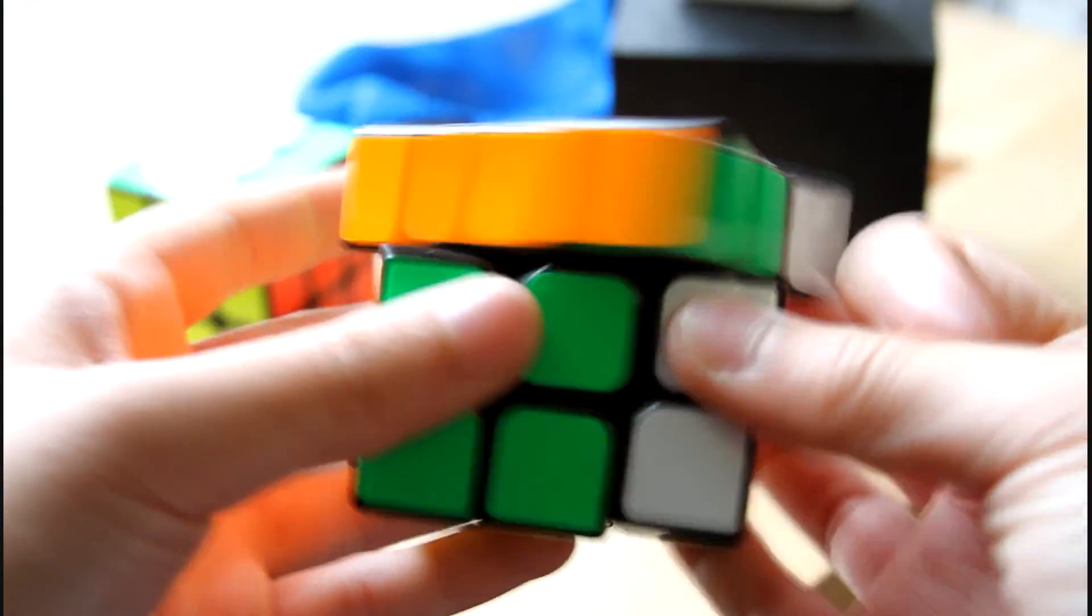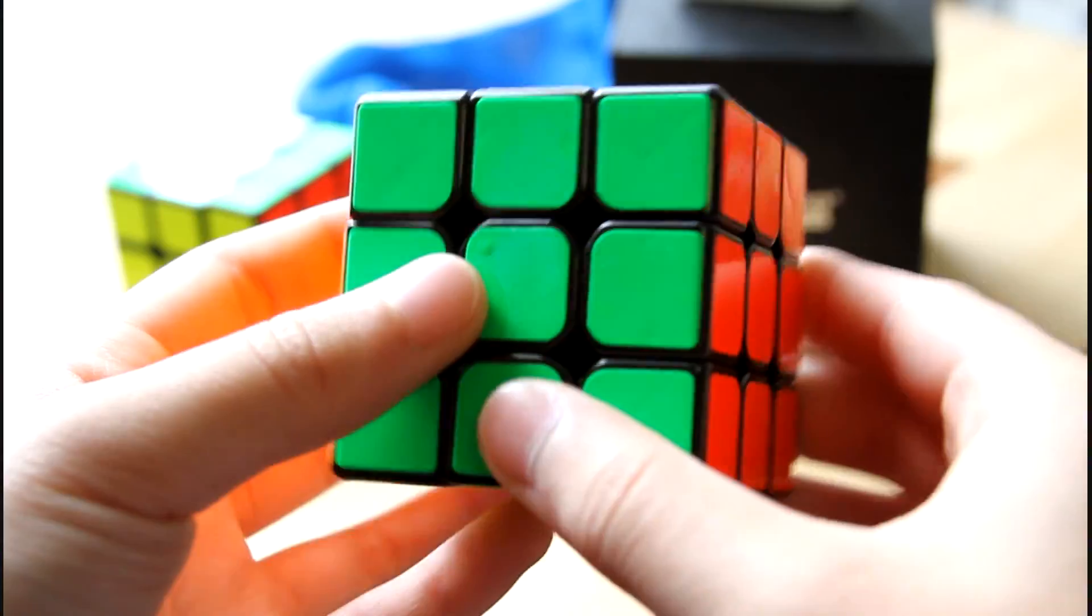The turning of this puzzle is really smooth, and if I were to compare it to another cube, I'd say it's a clackier Allong V1.